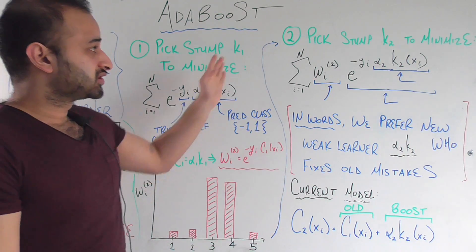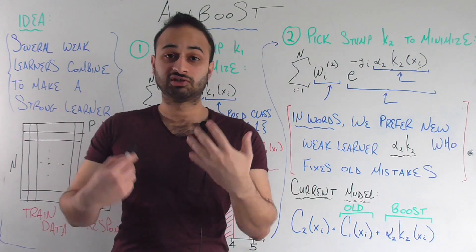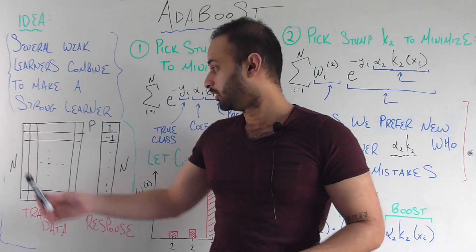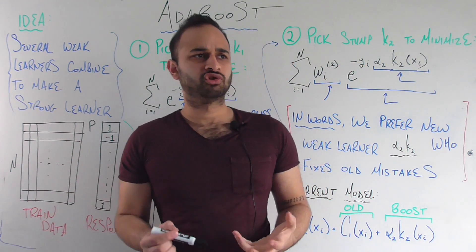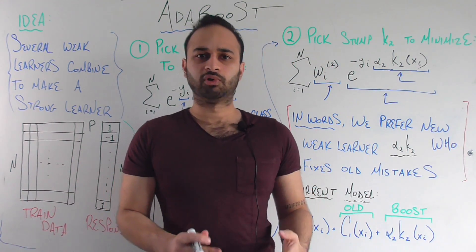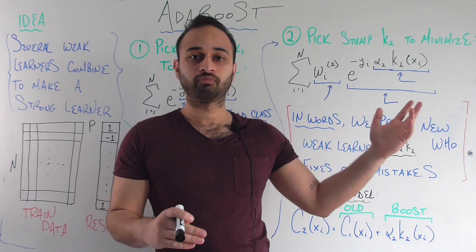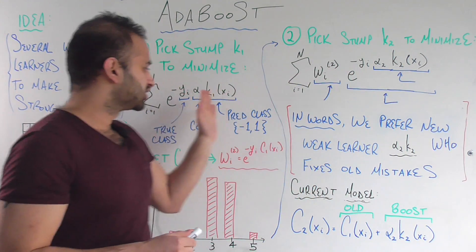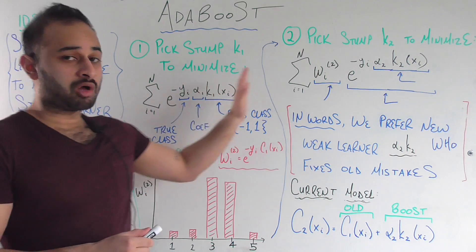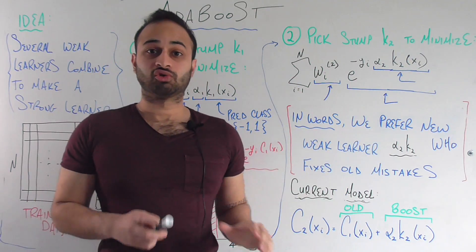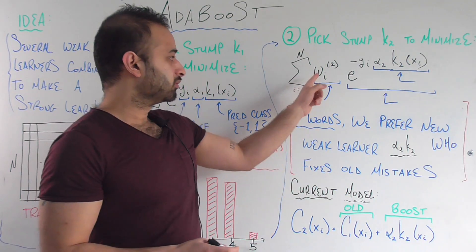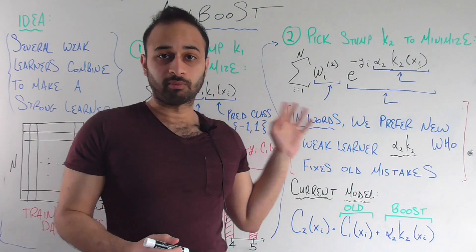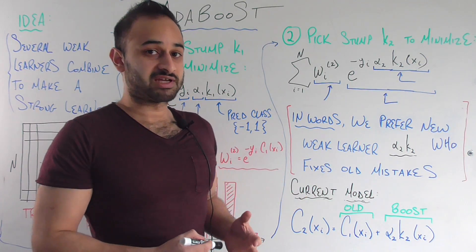And so we proceed in the same way. Step two is to pick a next decision stump, K2. You look through all the predictors again and choose your next predictor in order to build your next decision stump, K2. And now we want to minimize a very similar looking quantity — they look almost the same, with just one difference: this term w i2. So let's label each term of this formula so you can see the full story that it's trying to tell us.